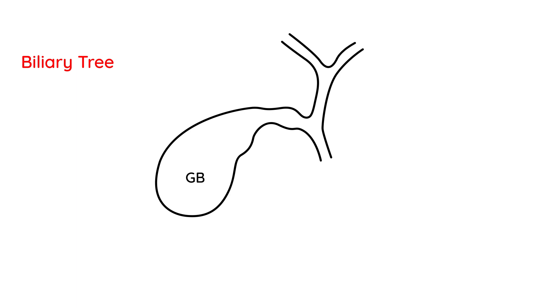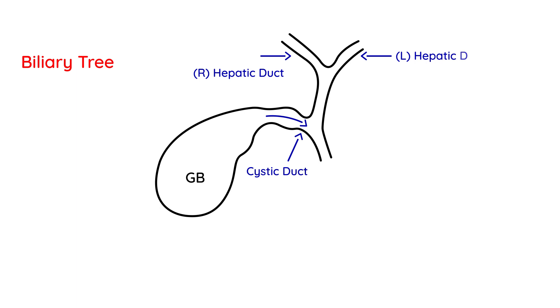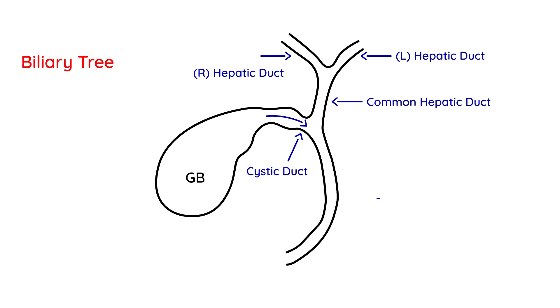Here is the gallbladder, labeled GB, and coming out of it is a system of ducts that comprise the biliary tree. This one is the cystic duct, where the gallbladder emits bile. Bile comes down the cystic duct, and up here are the right hepatic duct and the left hepatic duct, which combine to form the common hepatic duct.